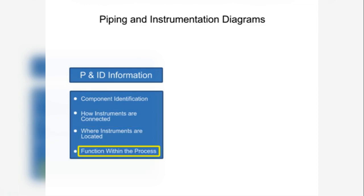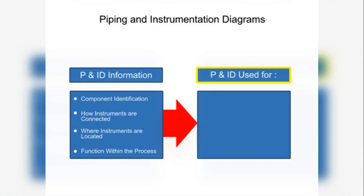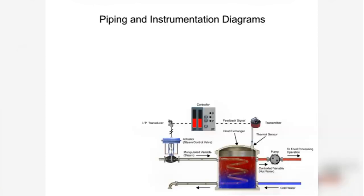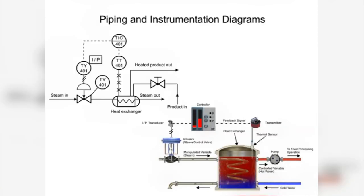And their function within a process. Comprehension of P and ID diagrams assist technicians when troubleshooting and monitoring specific processes. Comparing a heat exchanger to the piping and instrumentation diagram illustrates the symbol's function within a process.